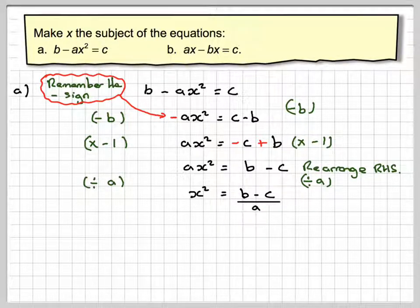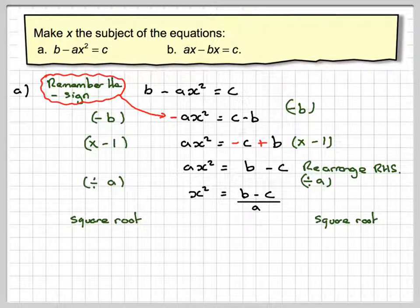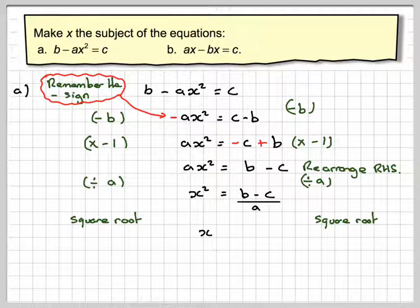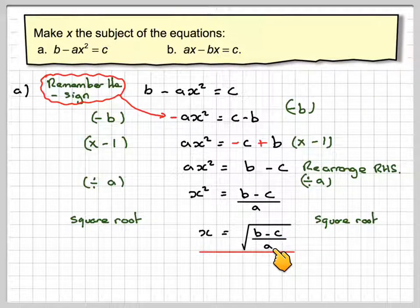The opposite of squaring is to take the square root. If we take the square root on both sides, then x is equal to the square root of b minus c all over a.